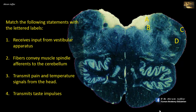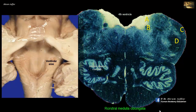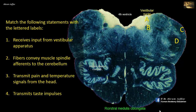Match the following statements with the lettered labels. This is a section of the open part of the medulla, which is the upper part — the part that does not contain a central canal, but in which the canal opens to form the floor of the lower part of the fourth ventricle. Note the crumpled bag shape of the inferior olivary nucleus that characterizes the upper medulla. The most lateral part of the floor of the fourth ventricle is formed by the vestibular area, deep to which are the vestibular nuclei, represented in A. A, the vestibular nuclei, thus matches with 1: receives input from the vestibular apparatus through the vestibulocochlear nerve.